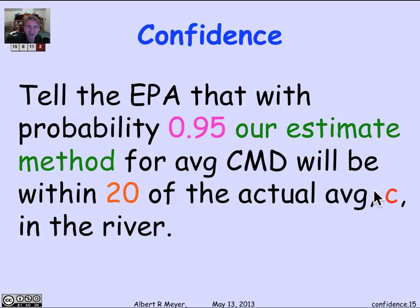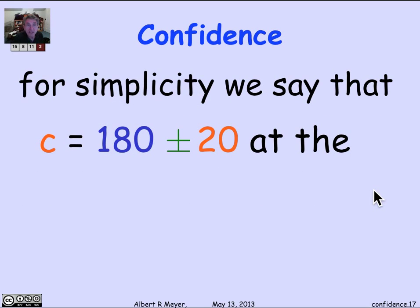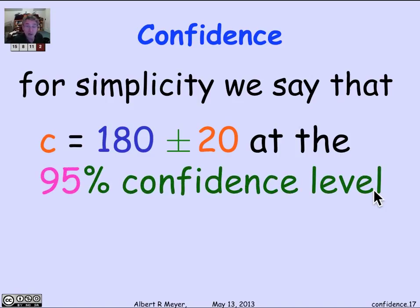It's our estimate that's correct with probability 0.95. This is a long thing to say to the EPA. We'd like to say the real average C is within 20 of 180, but we're not allowed to talk about the probability that C has some value. Instead, we summarize by saying that C is 180 plus or minus 20 at the 95% confidence level. That's shorthand for saying we've got this process that measured this unknown quantity and told us what it was.